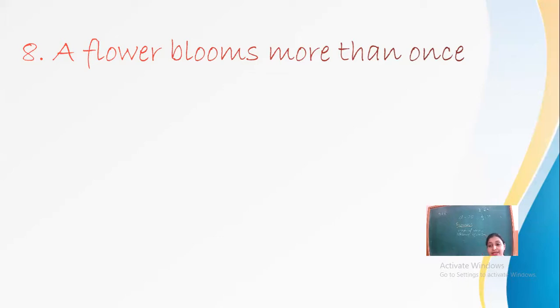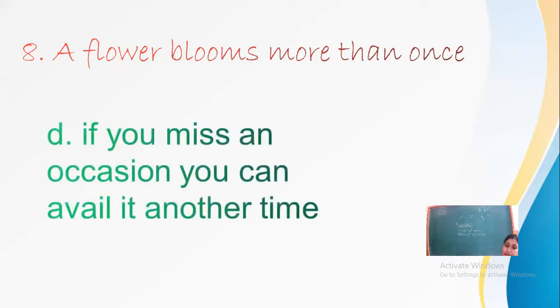So don't get upset. A flower blooms more than once means don't worry. Next year when your birthday comes, your friends will be with you. It means if you miss an occasion you can avail it another time. Occasions can be availed other time if for one or the other reason you have missed. So don't get upset, be happy and keep smiling.